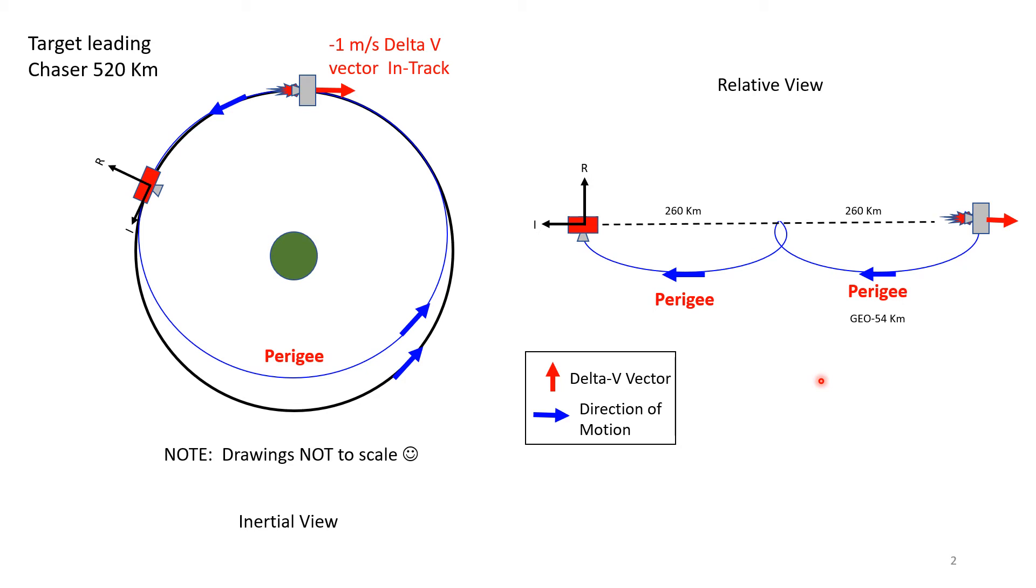Now you're really smart in this area of what happens if you do a prograde positive or retrograde negative delta-v in the in-track direction. Feel free to freeze the screen and study this. Inertial view, relative view—they're all the same, just from whose perspective you're looking at it. We'll wrap it up with a little chat on cross-track.